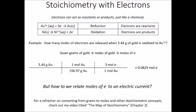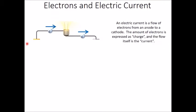But how do we relate moles of electrons to an electric current? Well honestly, an electric current is just a flow of electrons from an anode to a cathode. You can see that here. The electrons come out of the anode, they flow through the circuit, they make the light bulb light up, and then they flow back to the cathode. The amount of electrons is expressed in units of charge, and the flow itself is the current.